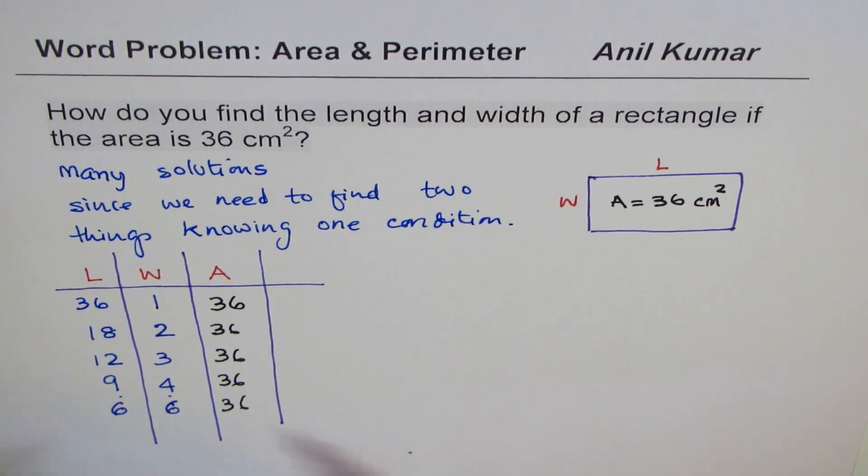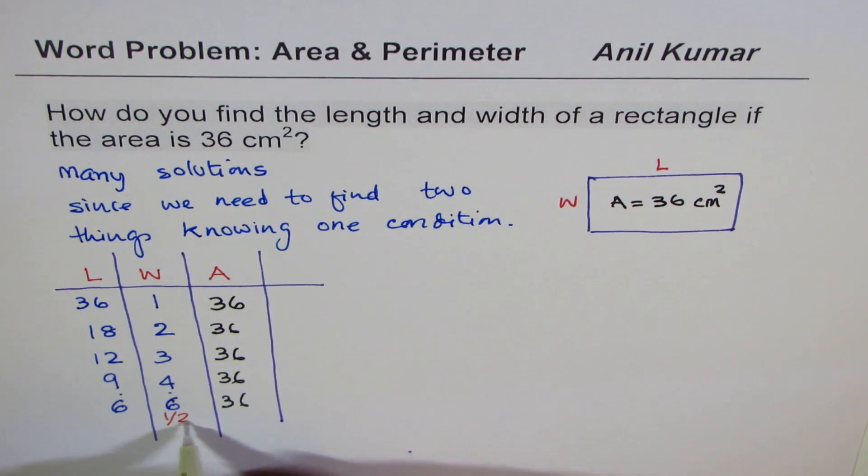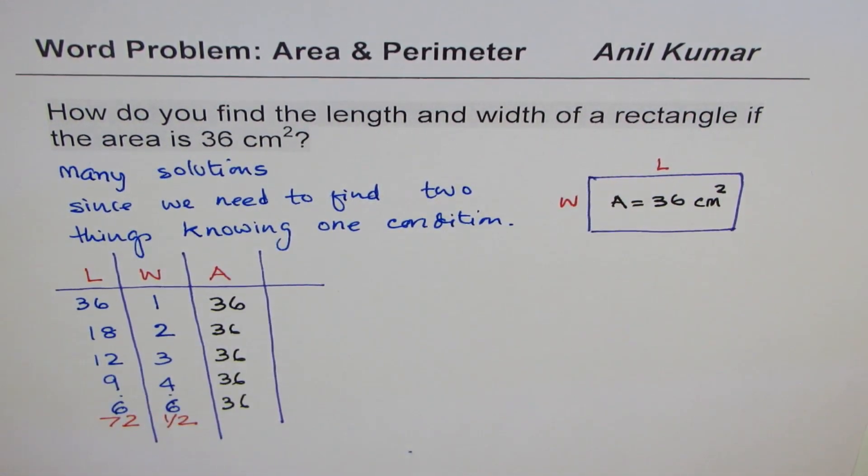We could even take values like half. So if I take a value of width as half, then the length can be 72. So there are many, many more possibilities to get to this result.